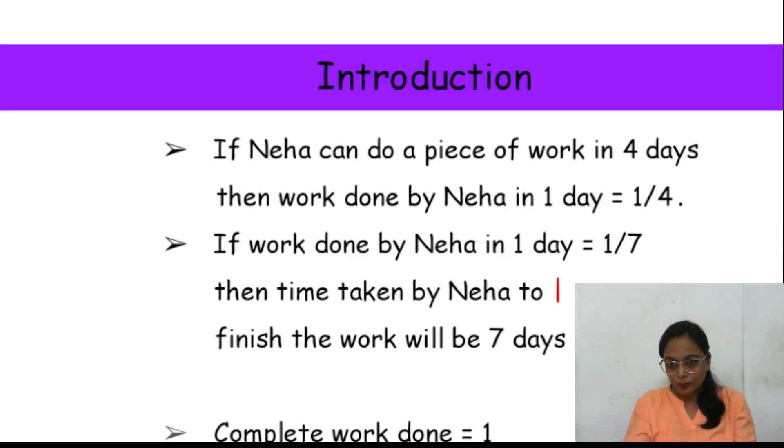Thik hai, phir short form dekhe. Agar one day mein one by seven hai, toh pura karne ke liye isko kitna lagega? Iska reciprocal that is seven days. Ya vise versa dekho. One day mein one by seven kaam hota hai, toh mujhe pura karwana hai, that is one karwana hai. Toh isme main kya multiply karun, ya main isme kya operation perform karun, ki mujhe keval one mile. Definitely, one by seven ko, jab main seven se multiply karungi, tabhi mujhe one milega na, that is seven days. Jis bhi tarike se aapko yaad rakhna hai, aap yaad rakhna.